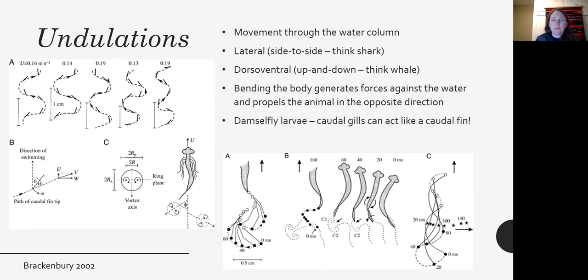And here's an image from a paper by Brackenbury showing damselfly larvae and how they use those caudal gill filaments at the end, kind of like a fish's tail acting like a caudal fin.